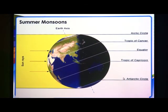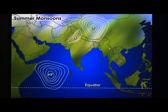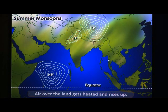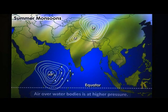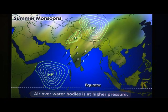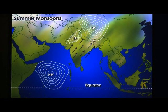Summer monsoons. When the sun is over the Tropic of Cancer, summer is experienced in Central Asia. As a result, the air above the land gets heated due to solar radiation and begins to rise, forming a low pressure zone. However, the surrounding oceans and seas are rather cooler and thus have high pressure over them. Therefore, the air begins to blow from high to low pressure, that is, from the sea to land. The warm winds on shore absorb moisture as they move over the sea and bring rainfall.